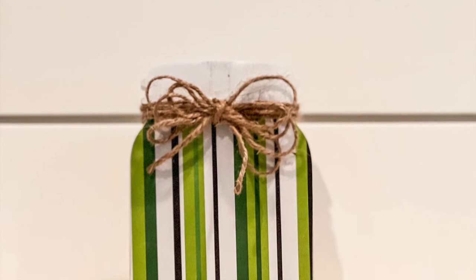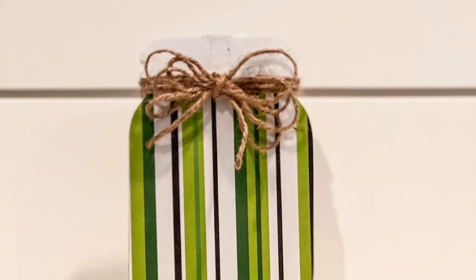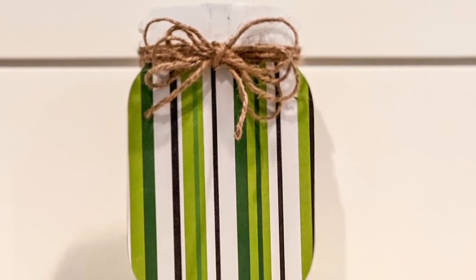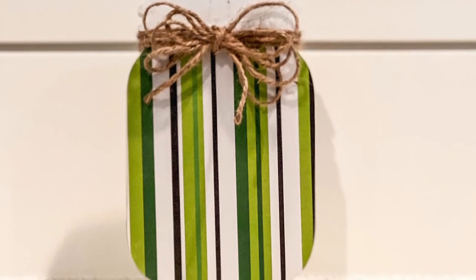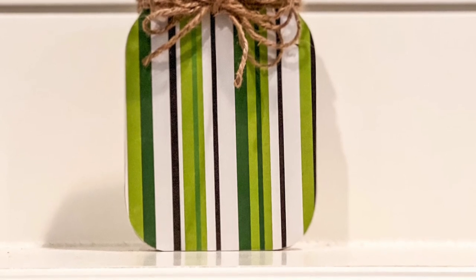So this is how DIY number five turned out, which is the backside of DIY number four. And I had added a bow to the top of it. And I think it looks cute. I think it would be a cute piece as kind of like a filler piece on your tiered tray.